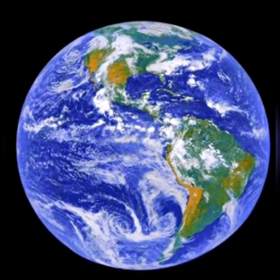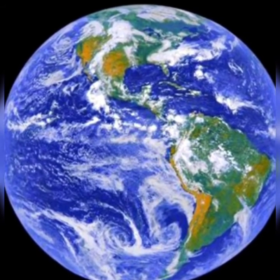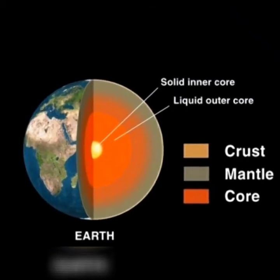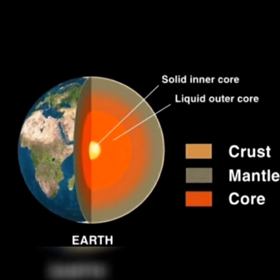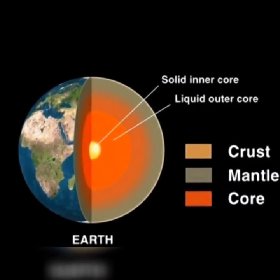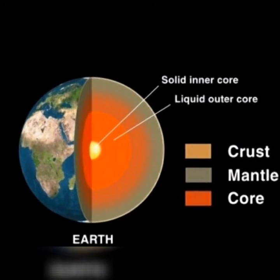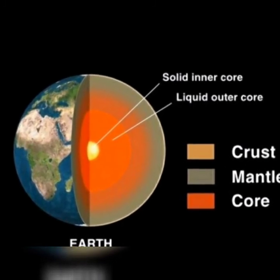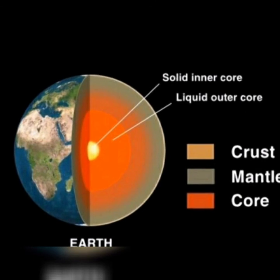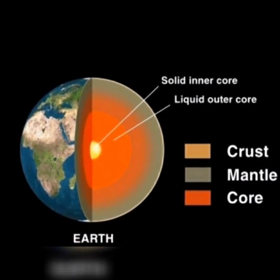Let's recap quickly. Today we looked at the structure of the earth and we said the earth is divided into three main layers: the crust, which we live on; the mantle, which is just beneath the crust; and then the core, which is the central part.